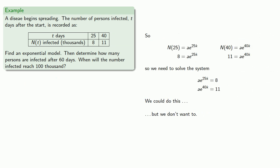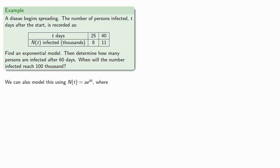Now, when we did this the first time, we said we didn't really want to solve this system of two equations in two unknowns, but we could have. So we can also model this using N(t) equals ae to the power kt.